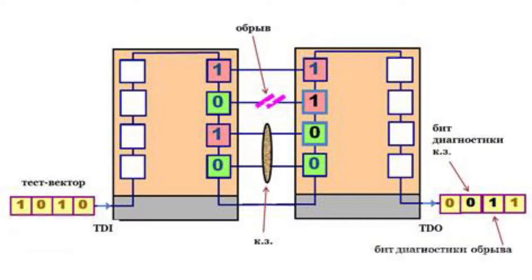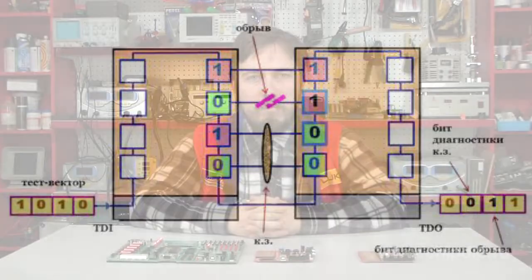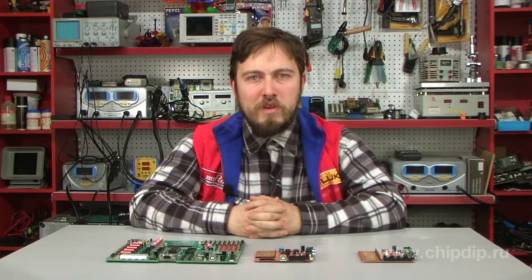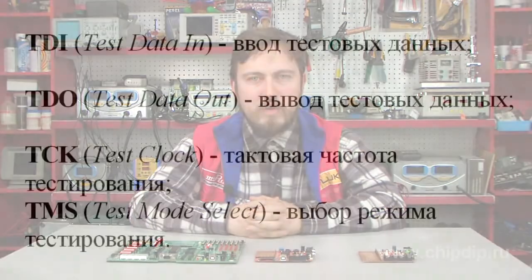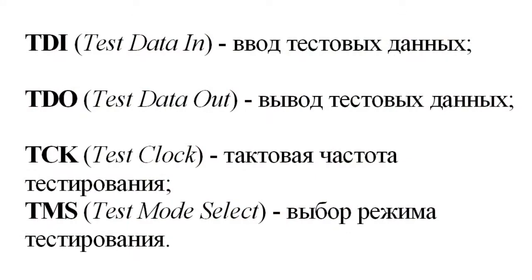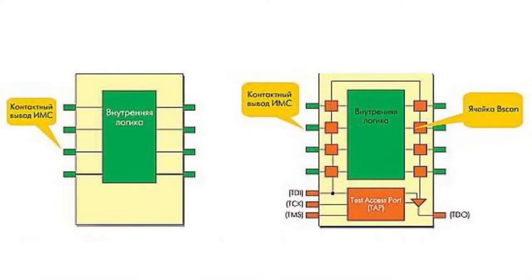The boundary scan technology provides isolation of faults of a controlled electronic module and connects it only in four test points: TDI, TCK, TMS, and TDO. Another advantage of the boundary scan is a significant performance improvement of the testing process by eliminating redundant searches for short circuits and breaks if the scan chain passes the test successfully.